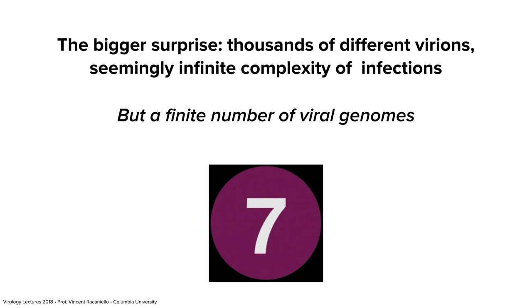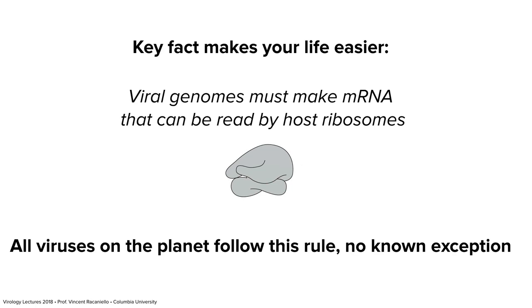There are lots of different viruses with different infection strategies, but it turns out there are only seven different kinds of viral genomes. I put the subway seven here so you'll remember it — next time you see that purple seven in the subway, you'll think of the seven viral genome types. For the rest of your lives, whenever you see the number seven, you'll think seven viral genome types. These seven genome types help us sort out the complexity among viruses.